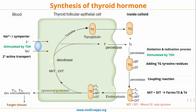Looking at an overview, there are five steps. The first step is the uptake of iodine by the thyroid follicular epithelial cells. The second step is the oxidation and iodination process, where iodine along with thyroglobulin forms MIT and DIT. The third step is the coupling reaction, wherein MIT and DIT combine to form T3 and T4.